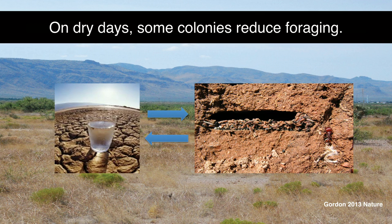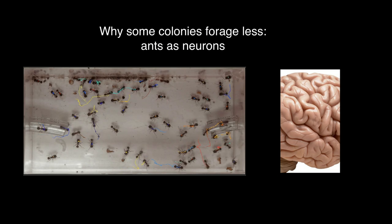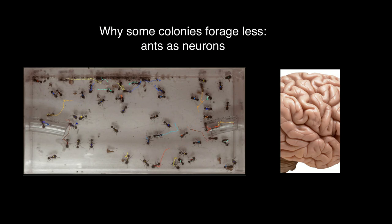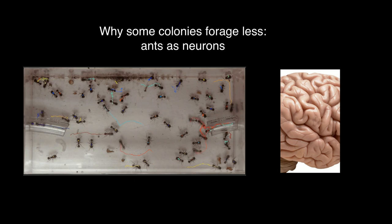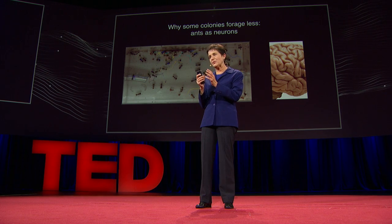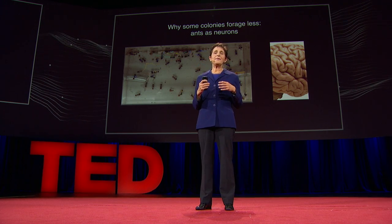We've been studying the evolution of this system. There's variation: colonies are different. On dry days, some colonies forage less, so colonies differ in how they manage the trade-off between spending water to search for seeds and getting water back in the form of seeds. We're trying to understand why some colonies forage less than others by thinking about ants as neurons, using models from neuroscience. Just as a neuron adds up its stimulation from other neurons to decide whether to fire, an ant adds up its stimulation from other ants to decide whether to forage. We're looking for whether there are small differences among colonies in how many interactions each ant needs before it's willing to go out and forage. This raises an analogous question about brains — every brain is slightly different, and maybe there are conditions in which the electrical properties of neurons require more stimulus to fire, leading to differences in brain function.